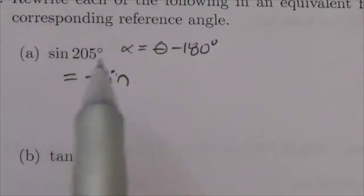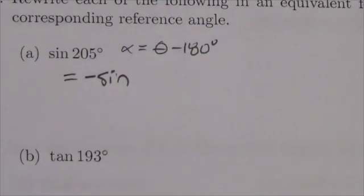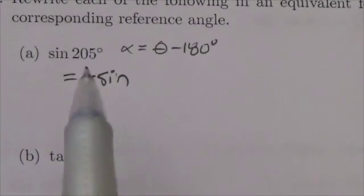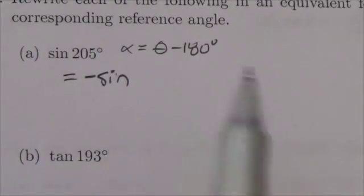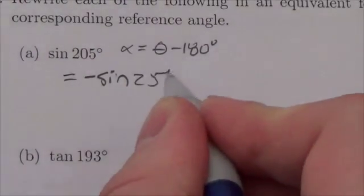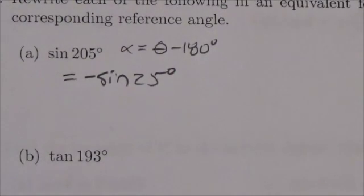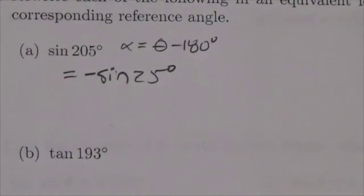Because if our angle is in the third quadrant, that means it's slightly beyond 180. Our reference angle is that difference. So 205 minus 180 is going to be 25. So that means that sine of 205 degrees is equal to the negative sine of 25 degrees.